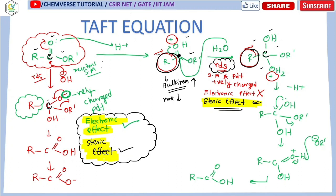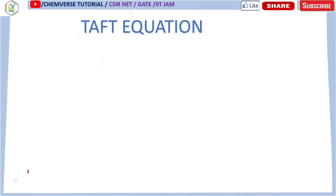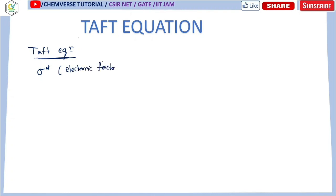So this is the basic introduction of the Taft equation — let's see how we can apply this equation to understand the steric factor of different substituents. In the Taft equation there are two parameters. One is sigma star (σ*), which is associated with the electronic factor. The other is Es, which is related to the steric factor.